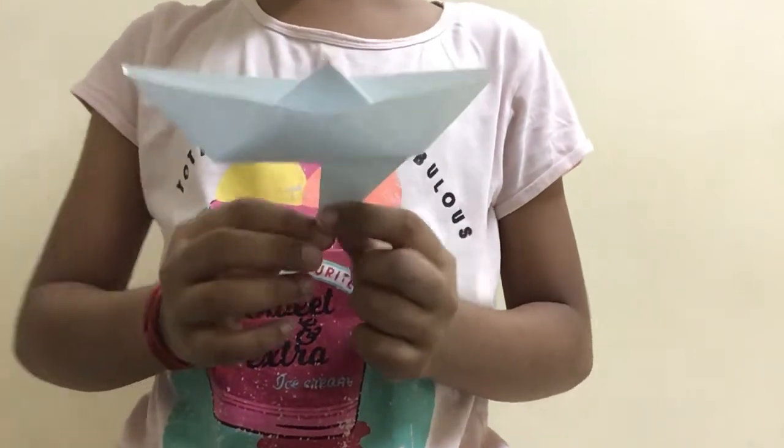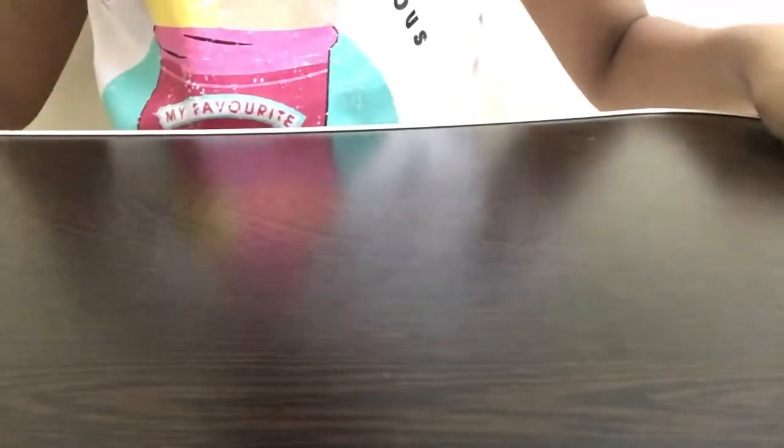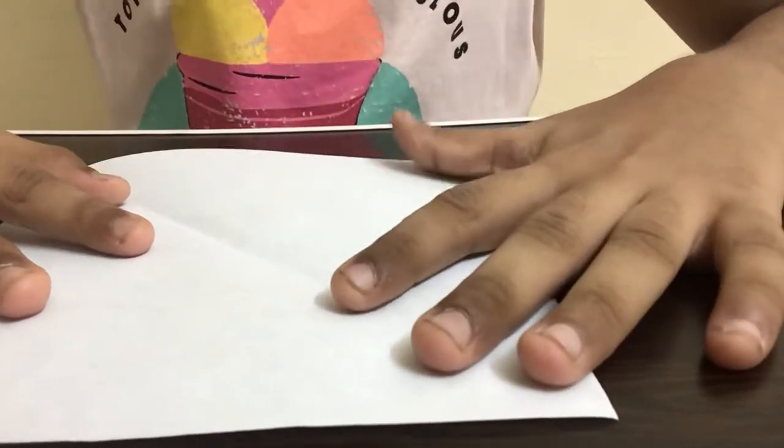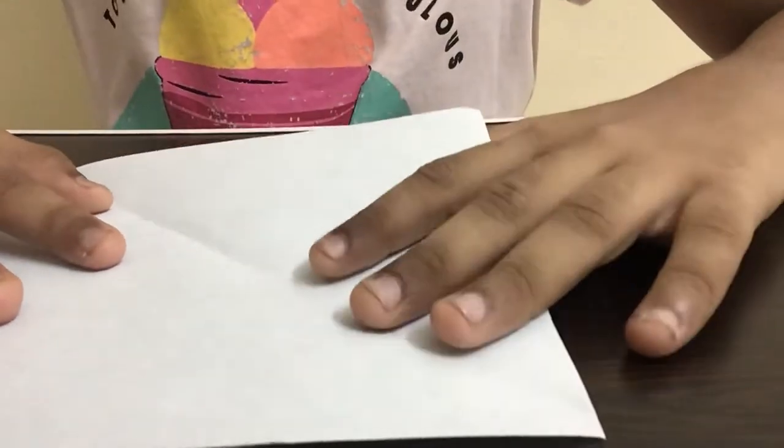So let's get started. First for this activity we need a square piece of paper. I'm taking light blue, you guys can take any color you like. The first step is that we're supposed to fold the paper in half like this.